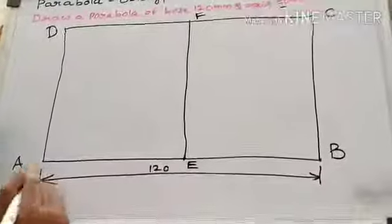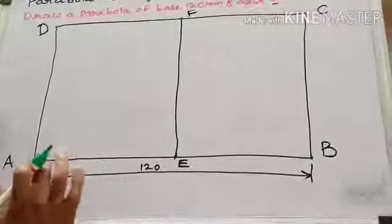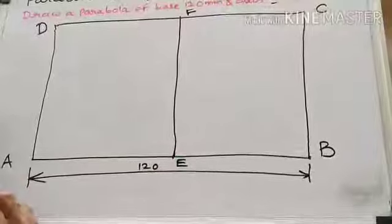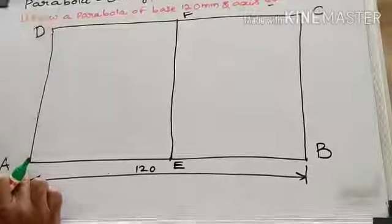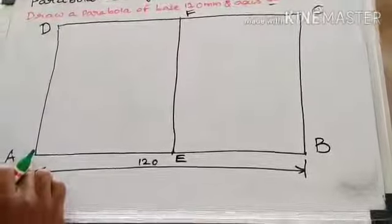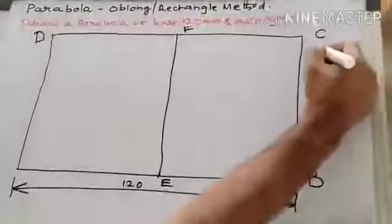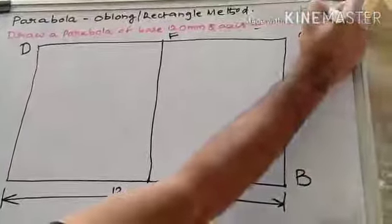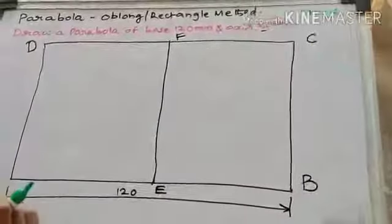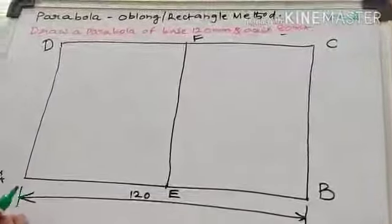From A point, AE line is going to be divided into N number of equal parts. AD line is going to be divided into N number of equal parts. Suppose, N is going to be 4 divisions. N is 4 divisions.